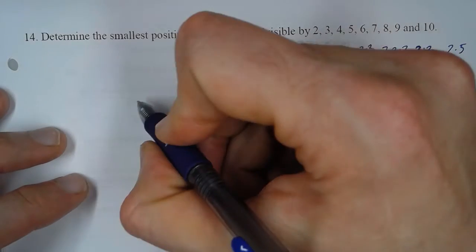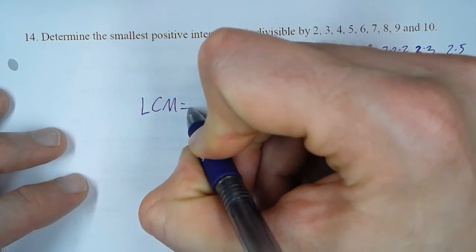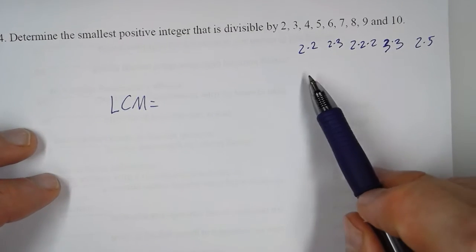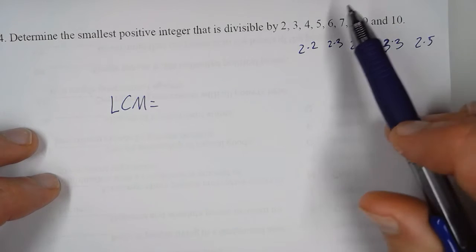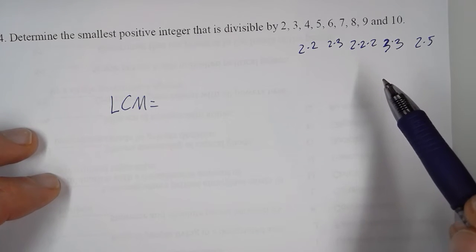So to get our lowest common multiple, we start with each prime number and say, in this entire list, what is the most of each prime number that any single number has?